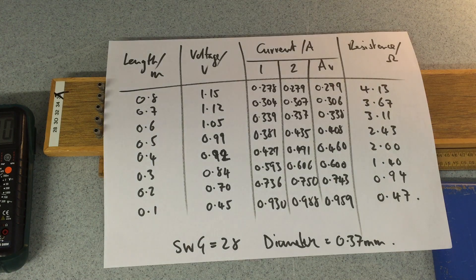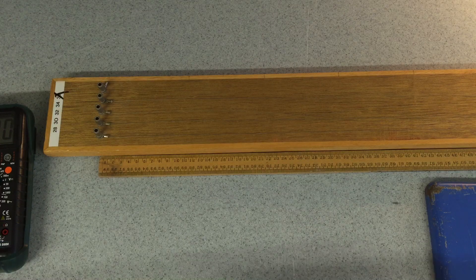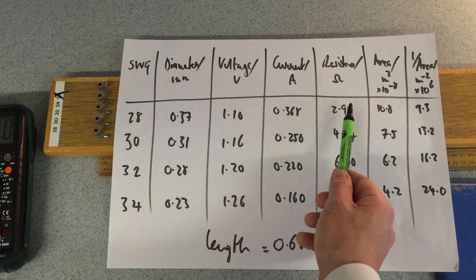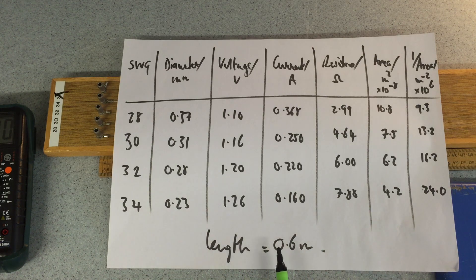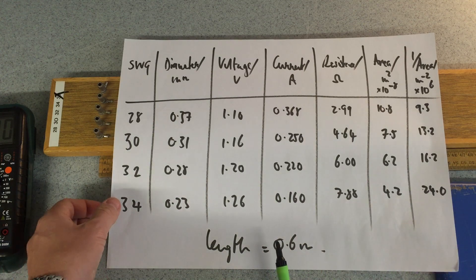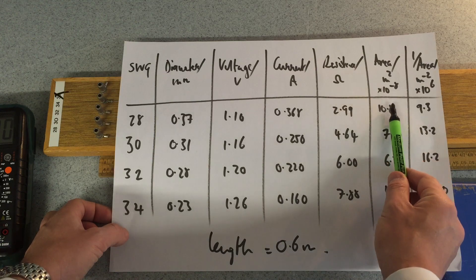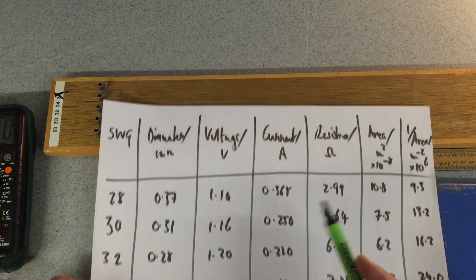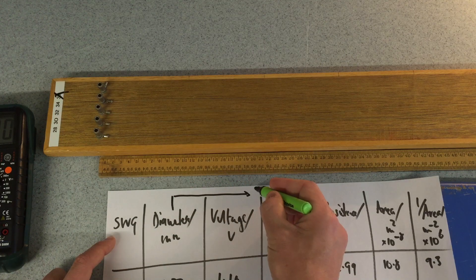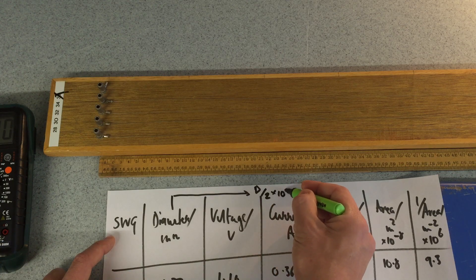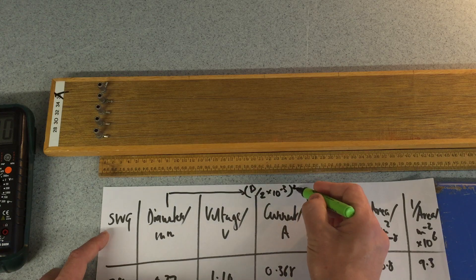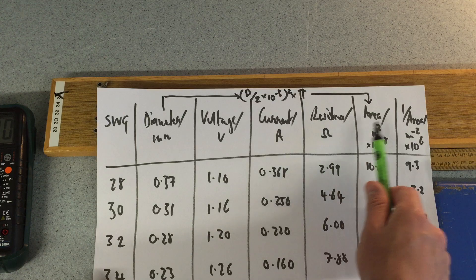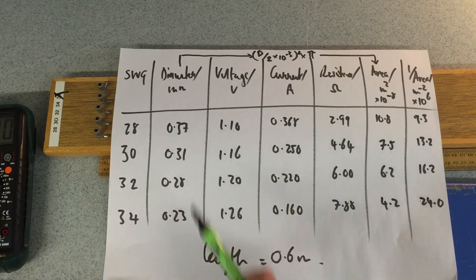Next data. Here we have the SWG numbers, hence the diameter which I measured, and therefore the resistance. This is all taken at 0.6 meters, which is the length I chose, a control variable. And then I've worked out the area times 10 to the minus 8 here, because otherwise I could have huge numbers of zeros. And then finally, 1 over the area. Bearing in mind here, of course, in order to move from diameter to area, I need to take the diameter, divide by 2, and put it into meters. I need to then square that and times it by pi in order to achieve the area.